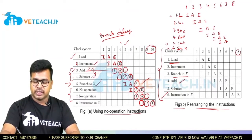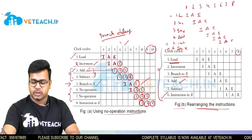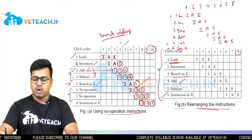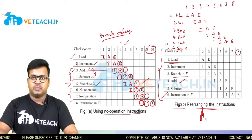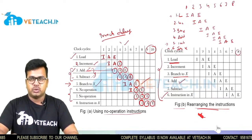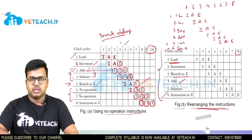After the eighth clock cycle, instruction X is finally executed. This is how the delay in the branch is reduced after rearranging the instructions using RISC processors.